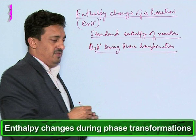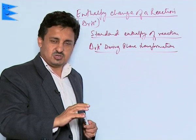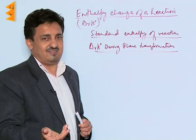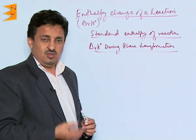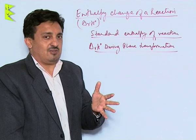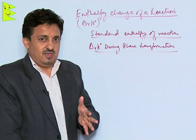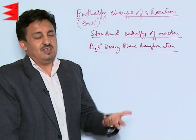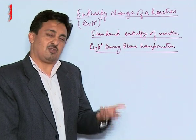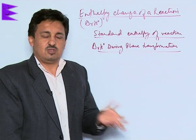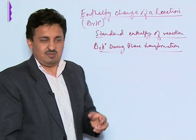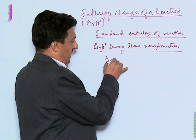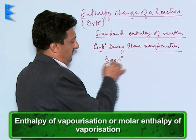During any process or reaction, whatever the amount of heat is being lost or accepted, that is the enthalpy of the reaction. We name those enthalpies of reactions according to what is happening in the reaction. If phase transformations are taking place, we will name the enthalpy of reaction according to which phase transformation is occurring. The first one we call enthalpy of vaporization.